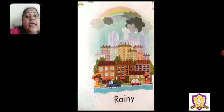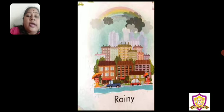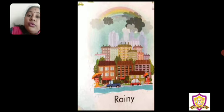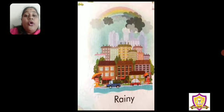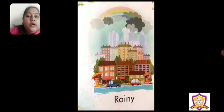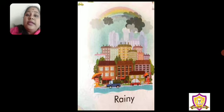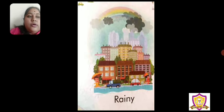So rainy season means baarish ka mausam. And during summer we get mangoes. During rainy season, what is the famous food? Corn. We eat corn during rainy season. So first we saw spring, then we saw summer, then rainy.